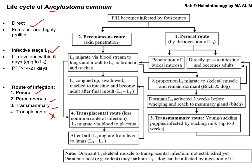In the life cycle, the predilection site for the adult parasite is the small intestine, where female parasites lay eggs. The eggs are passed through the feces and in the environment hatch to produce the infective stage L3. The final host can be infected by four routes. In the paroral route of infection, the final host ingests L3 with contaminated food and water, and the L3 passes directly to the intestine to become the adult parasite. However, some L3 penetrate the buccal mucosa and follow the percutaneous route.